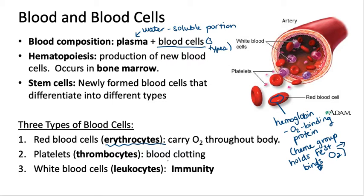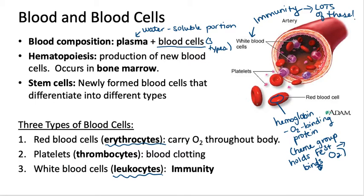White blood cells are called leukocytes, and their general job is immunity — they are the cells of the immune system. There are many different types of leukocytes. Thrombocytes are the platelets, involved in clotting. Make sure you can match the names of these blood cells to their common names as well as to their functions.